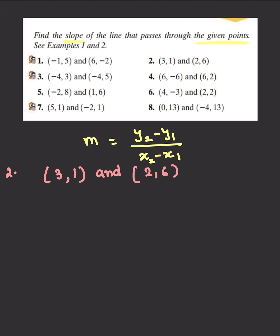Again, go ahead and label your coordinates as x1, y1 and x2, y2, and then use the formula m equals y2 minus y1 over x2 minus x1.